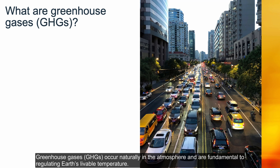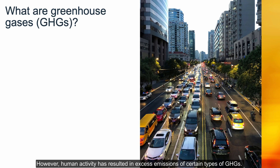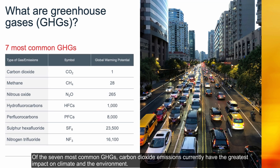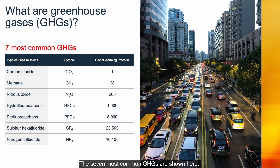Greenhouse gases occur naturally in the atmosphere and are fundamental to regulating Earth's livable temperature. However, human activity has resulted in excess emissions of certain types of GHGs. Of the seven most common GHGs, carbon dioxide emissions currently have the greatest impact on climate and the environment. The seven most common GHGs are shown here.